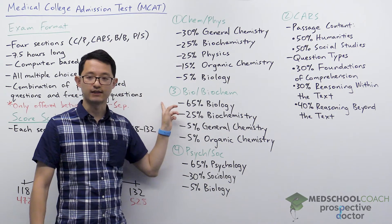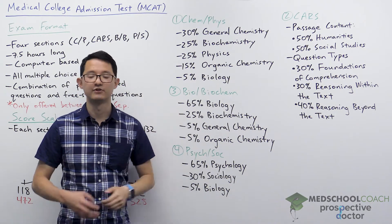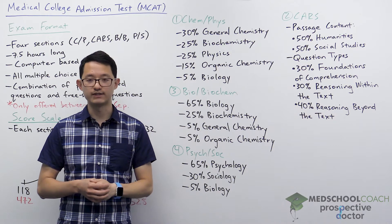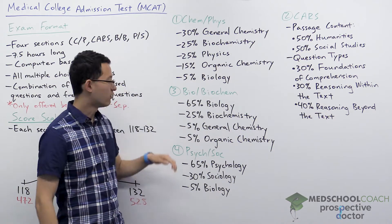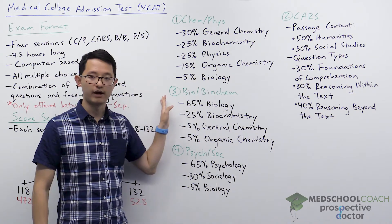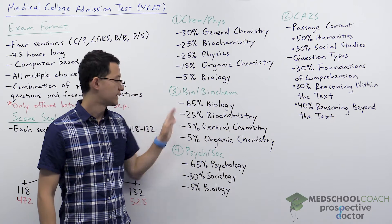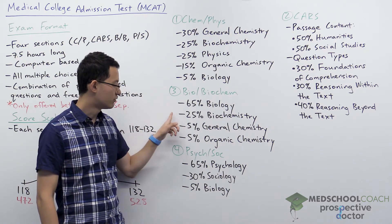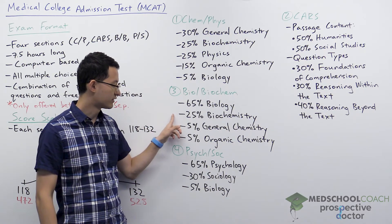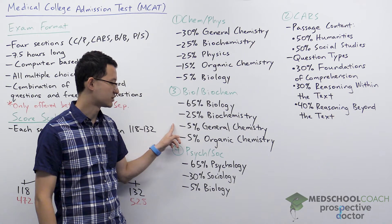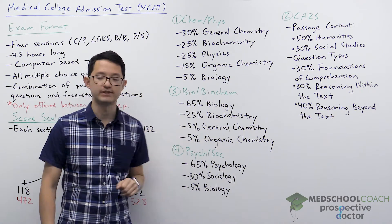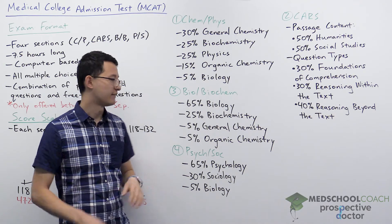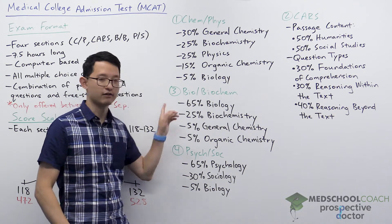The third section is the biological and biochemical foundations of living systems, or the Bio-Biochem section. This section is 65% biology, 25% biochemistry, 5% general chemistry, and 5% organic chemistry. As you can see, this section is very heavy on biology.